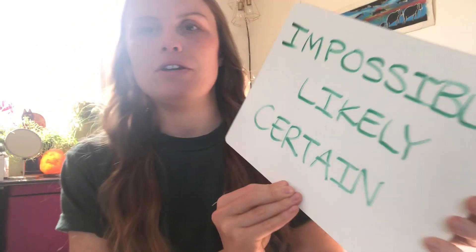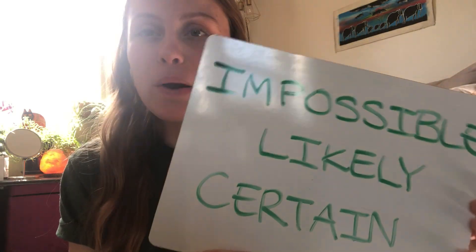Hi second graders, today we're going to be talking about three words that we use in life and in math. You've probably heard them before. These three words are: impossible, likely, and certain. These words are super important and you use them a lot.